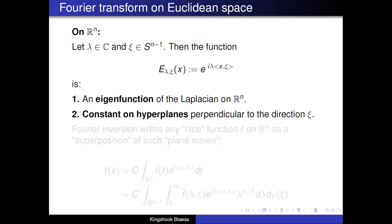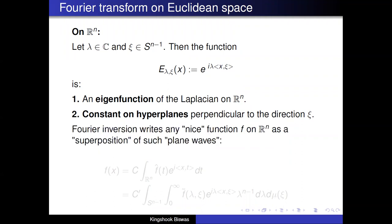The first thing you can observe about this function is that it is an eigenfunction of the Laplacian on Rⁿ. Secondly, this function is constant on the hyperplanes in Rⁿ which are perpendicular to the direction ξ. The hyperplanes are of the form ⟨x,ξ⟩ = constant. When λ is real, you think of this as a plane wave which oscillates as you move in the direction ξ.